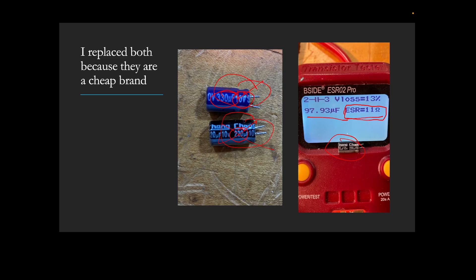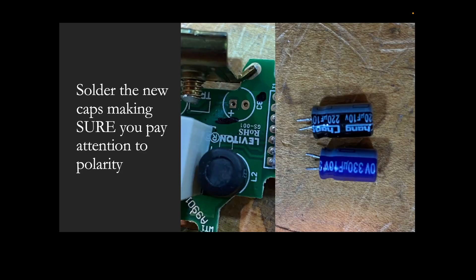If you're interested in buying a little ESR meter like this for capacitors, this thing will test capacitors, transistors, and a little bit more. You can get it on Amazon for like 25 bucks I think is what I paid for this, and it really works very well. Just do a search for B-side ESR02 Pro, and it'll come right up on Amazon. You should have some options to look at there.